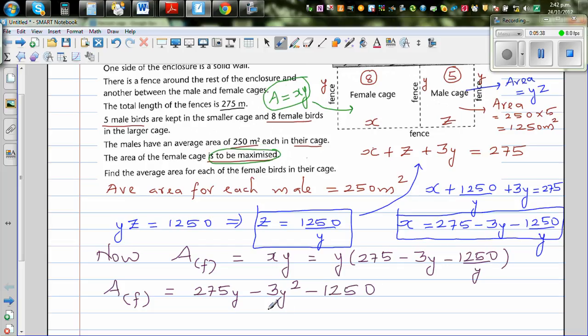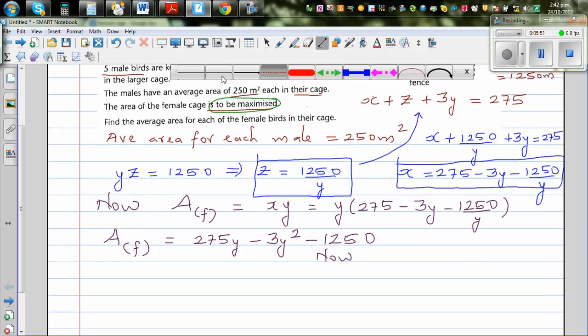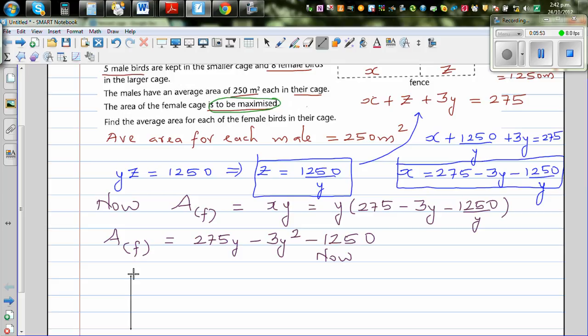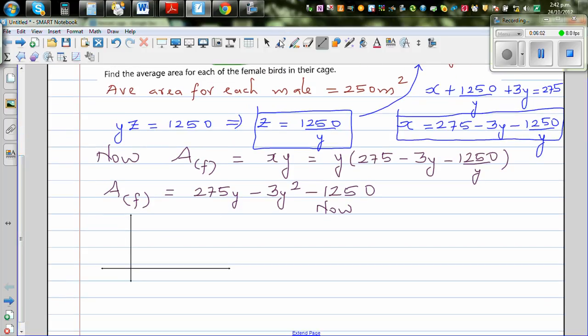Let me write A_f. A_f means area of the female cage is X times Y, which is Y times X. What is X? X is 275 minus 3Y minus 1250 over Y. So let's expand this. This becomes A_f equals 275Y minus 3Y squared minus 1250.